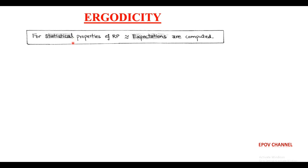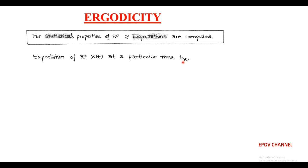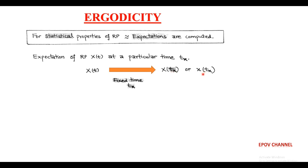As we have already discussed in last video lectures, the properties of random process are statistically computed using the expectation operator. In order to find the expectation of random process x(t) at a particular time t_k, the random process x(t) is observed at that fixed time t_k and we get a random variable x(t_k).